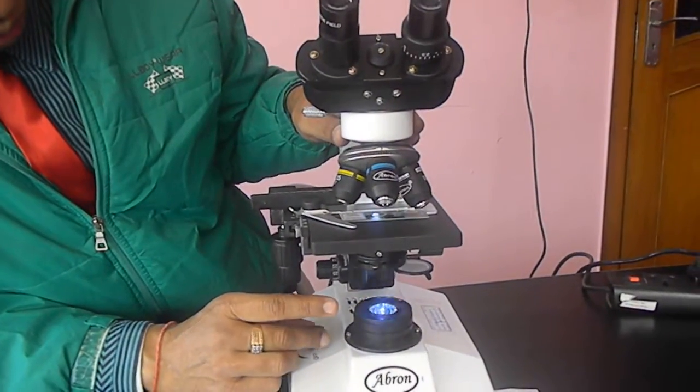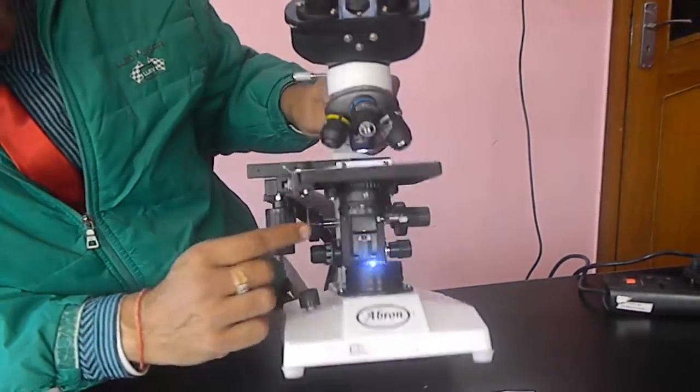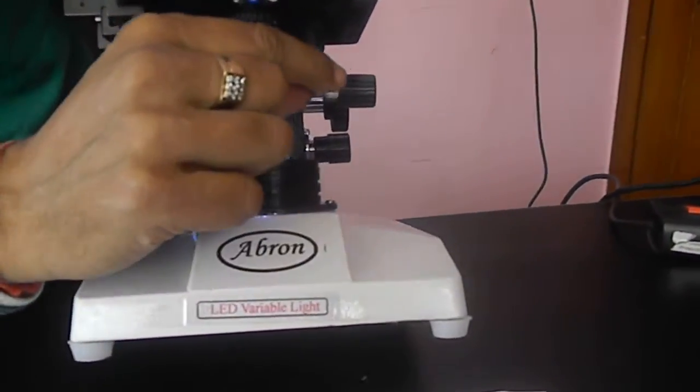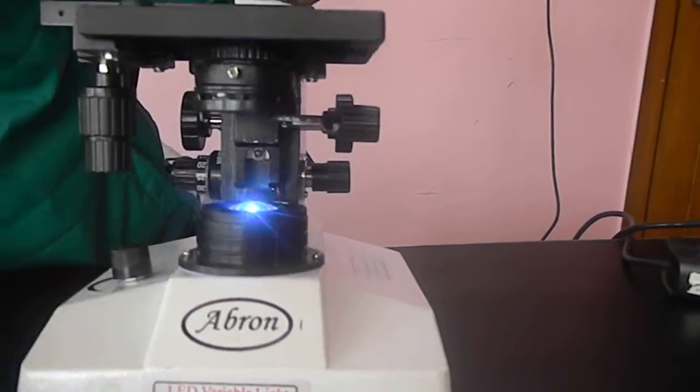Switch on the LED, put it to the maximum, and there is one condenser light. You can remove this blue filter. You can put it on one side so that the maximum light goes up.